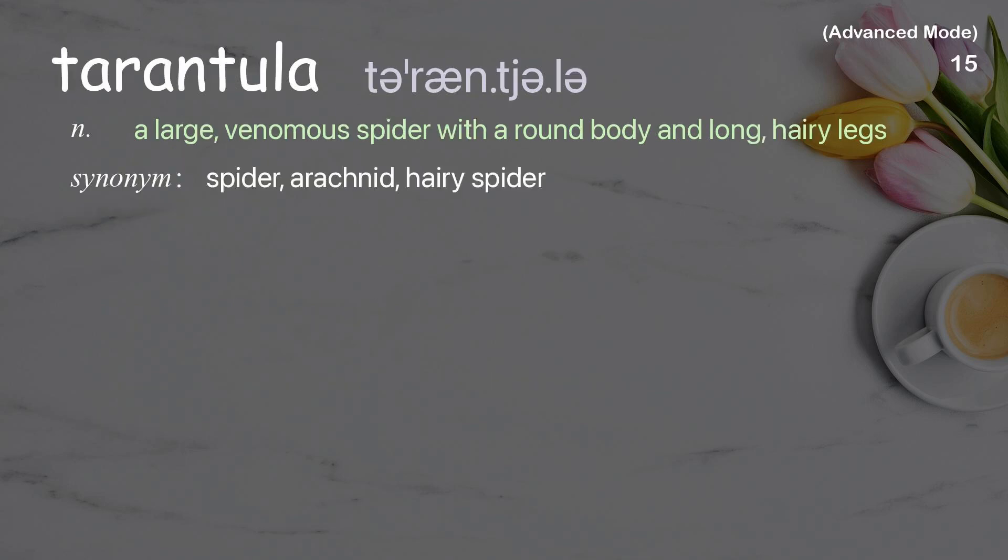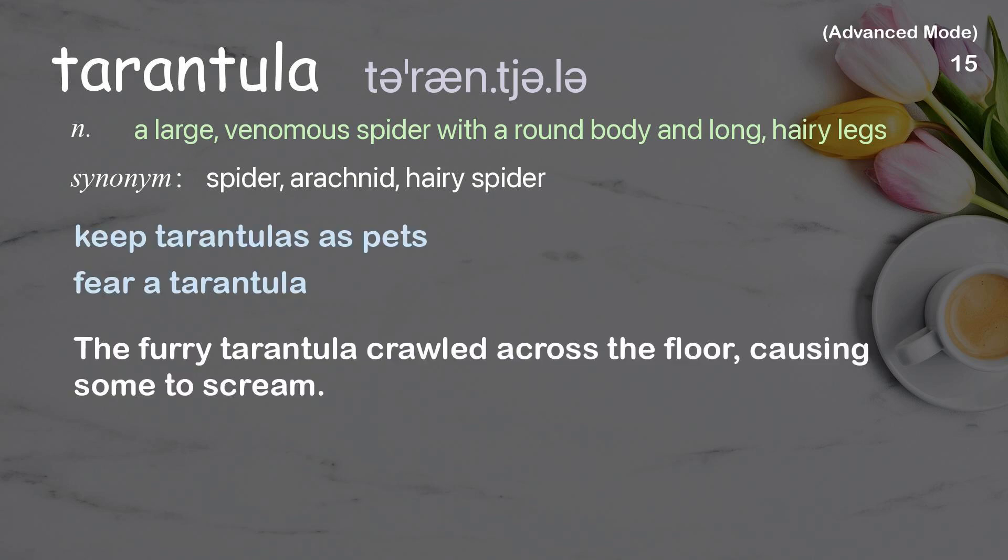Tarantula: a large, venomous spider with a round body and long, hairy legs. Examples: keep tarantulas as pets, fear a tarantula. The furry tarantula crawled across the floor, causing some to scream.